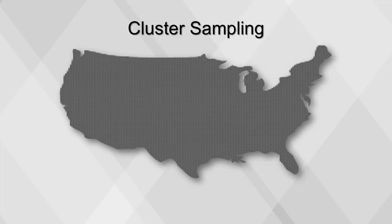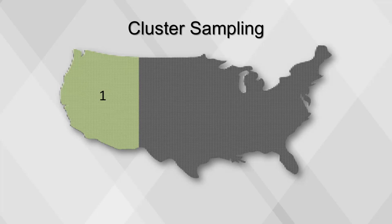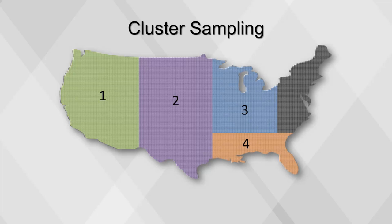In cluster sampling, the population is separated into clusters, such as regions of the country, and then a random sample of the clusters is selected. The primary advantage of cluster sampling is sampling convenience and possibly lower cost.